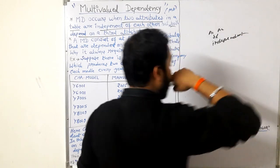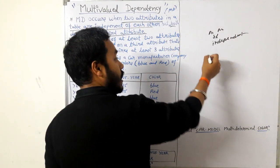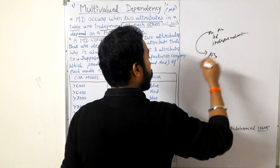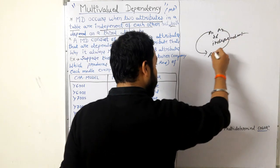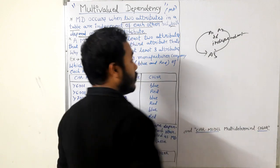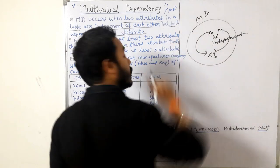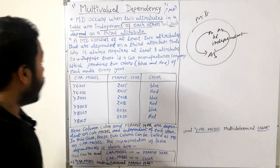Both A1 is dependent on AT and A2 is also dependent on AT. Then we say that there exists multi-valued dependency.